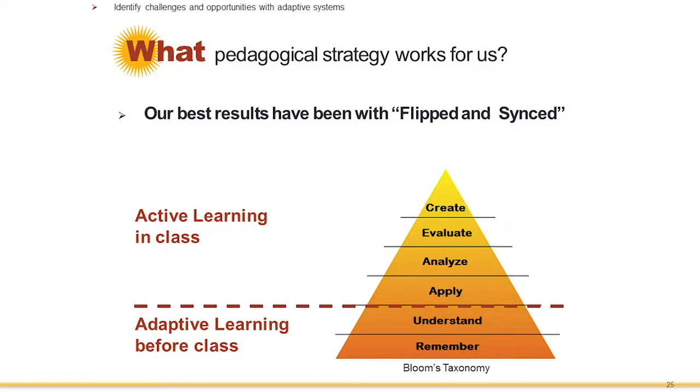The model that gives us the best success has been an evolution — proper tool for the proper task. Adaptive learning systems can deliver on the base of Bloom's Taxonomy, and that's where adaptive courseware excels. What we've done is taken all of the lectures, videotaped them, put them into the adaptive system along with all the text from textbooks, assessment questions, exercises, and interactive tools. Students are expected to do all of that before they come to class.